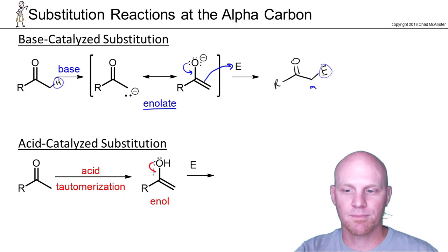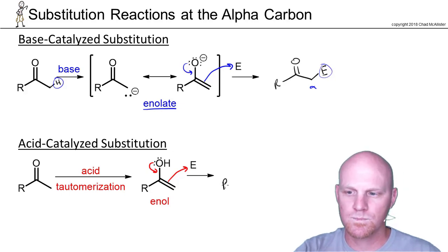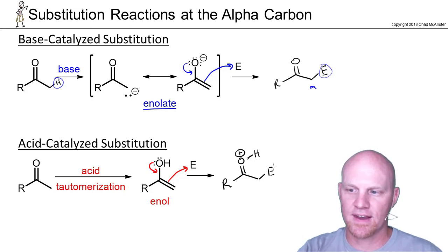But then you'll do the same kind of thing. Pop these electrons down here to become pi electrons, freeing these up to come and attack. And the electrophile is now attached at that alpha carbon as well.